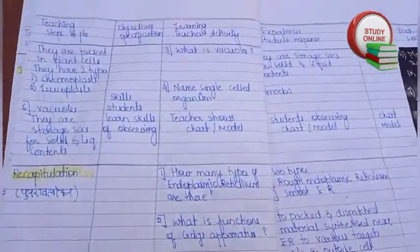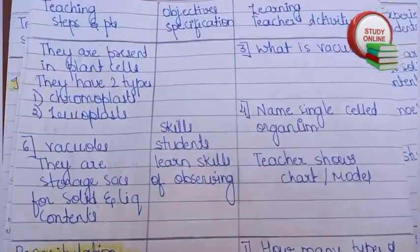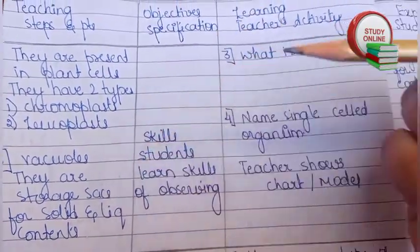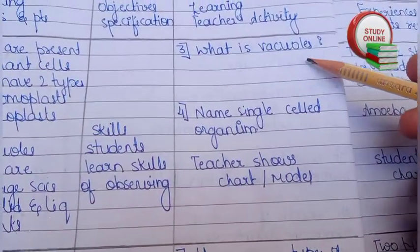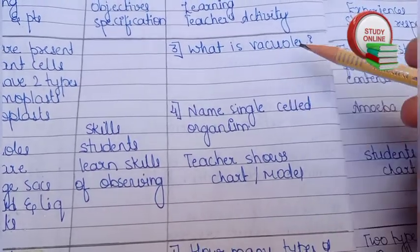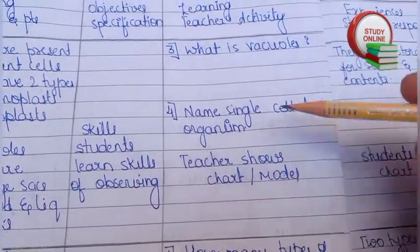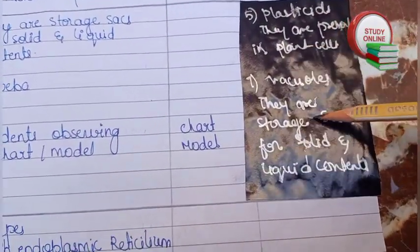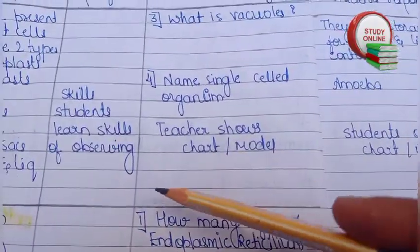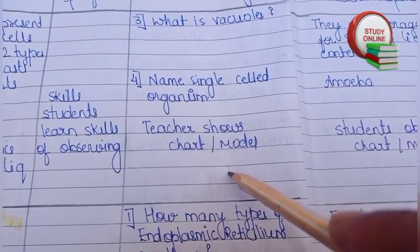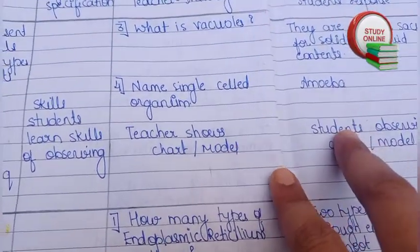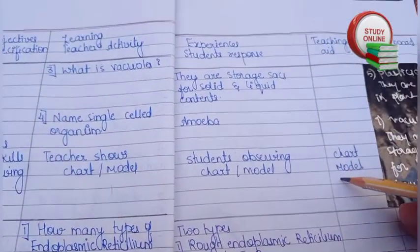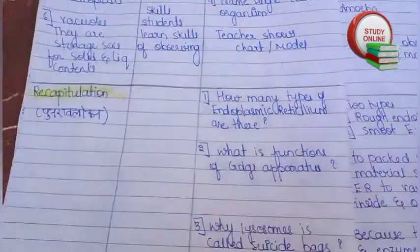Here is the rest part of Presentation 2. The remaining questions are: What are vacuoles? Name a single-celled organism. Here is the expected answer and the blackboard work. The skill here is that the teacher has to show a chart or model and teach with the help of that. Students will be observing the chart or model, and for teaching aids we write down the chart we are going to use.